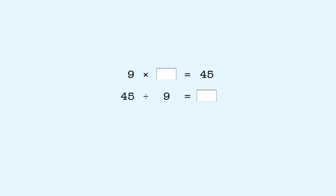The answer is one more than the digit in the tens place of the product. So the answer is 5. So 45 divided by 9 is 5.